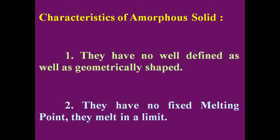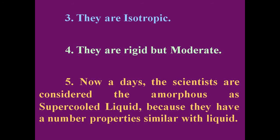Now we discuss about the characteristics of amorphous solids. Firstly, they are not well-defined geometrically shaped. Secondly, they have no sharp melting point; they melt over a range. Thirdly, they are isotropic — that is, all physical properties are the same in every direction. Fourthly, they are rigid but moderate. Fifthly, scientists now consider amorphous solids as supercooled liquids, because they have a number of properties similar to liquids.